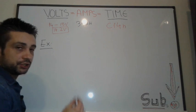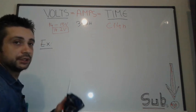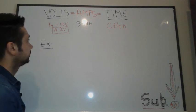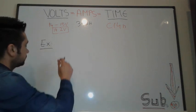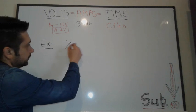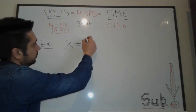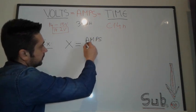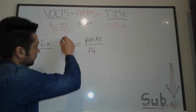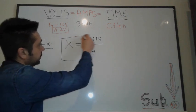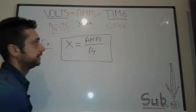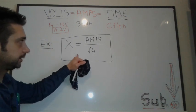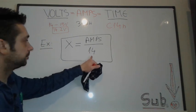So in conclusion, our general formula for calculating the charger needed for a 12 volt battery in particular should be X, the charger, equals amps over 14. So this is your formula in general if you don't have any specifications of the battery.